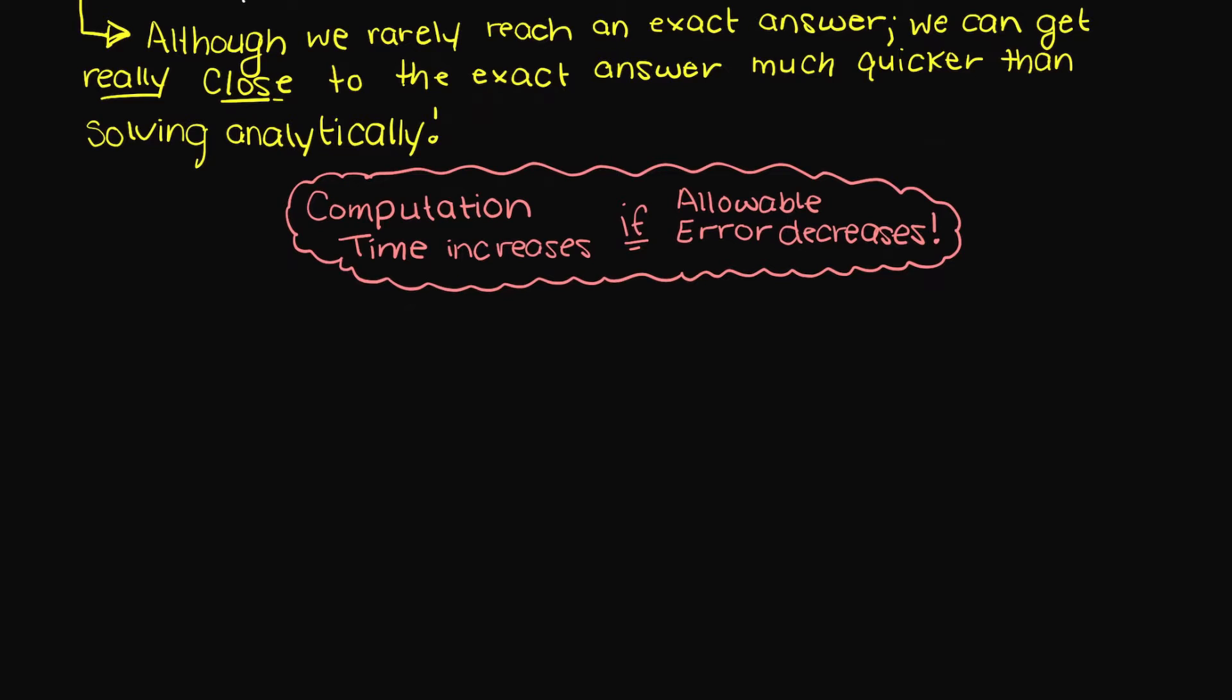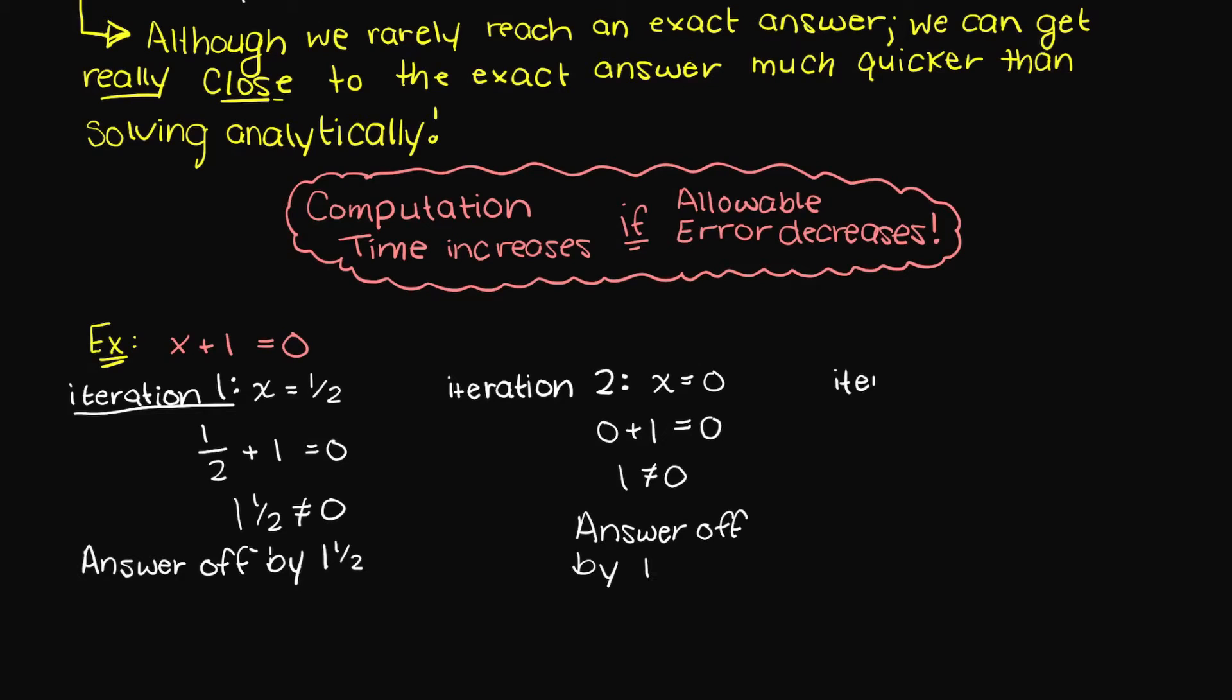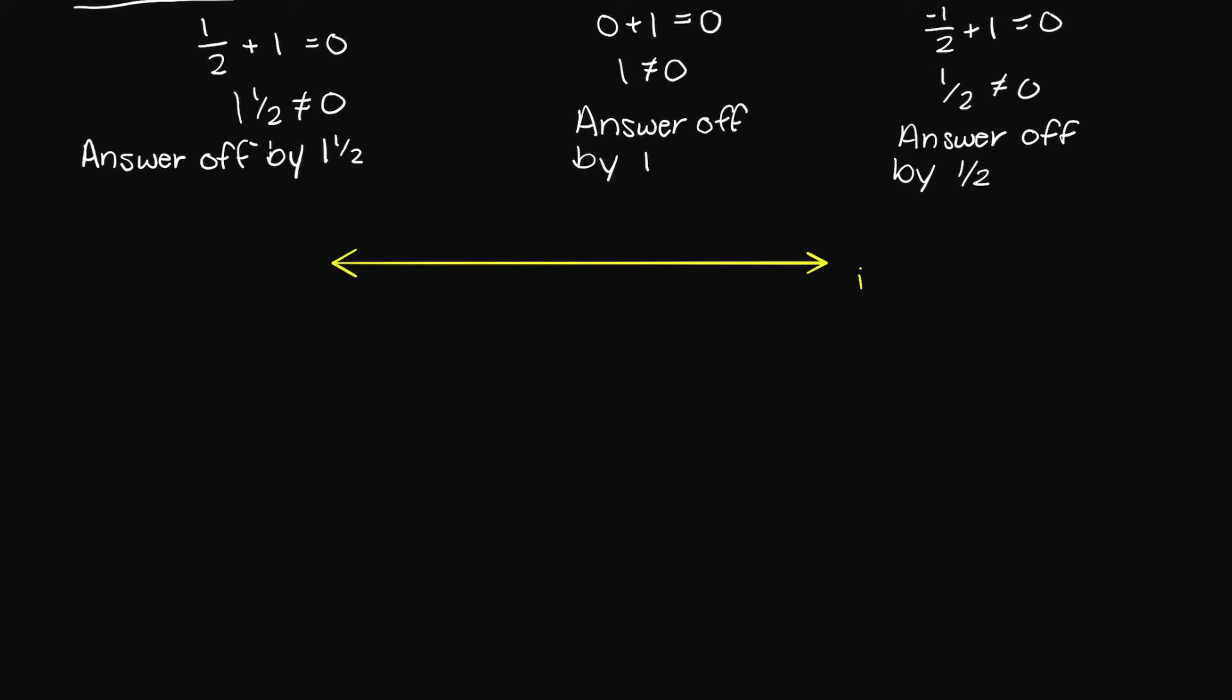So to make this more clear, let's go back to our x plus 1 equals 0 problem and begin with a guess of 1 half. Well, we would plug in 1 half for x and find that 1 and a half does not equal 0. So we would try a new guess and so on and so forth until our left side gets really close to our right side.